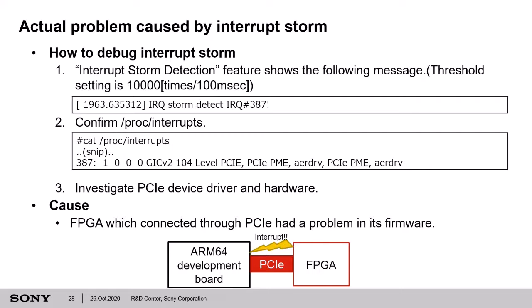I enabled the kernel configs and set the threshold at 10,000 times per 100 ms and built the kernel. After that, this message was shown with the enabled Interrupt Storm Detection kernel. I could see the IRQ number that caused the interrupt storm, so I confirmed which device driver's interrupt handler was registered on IRQ 387 by checking proc/interrupts. In this case, the PCIe device driver's interrupt handler was registered on IRQ 387. So we investigated the PCIe device driver, PCIe hardware, and devices connected via PCIe. As a result, we worked out that this issue was caused by FPGA firmware connected through PCIe. After that, we fixed the FPGA firmware and the problem no longer occurred.